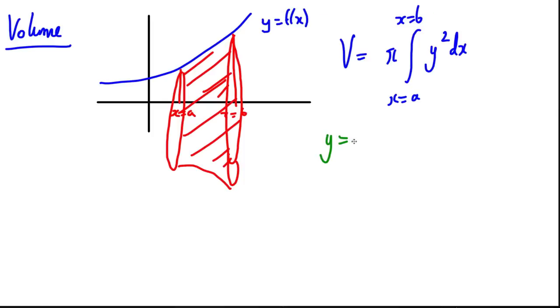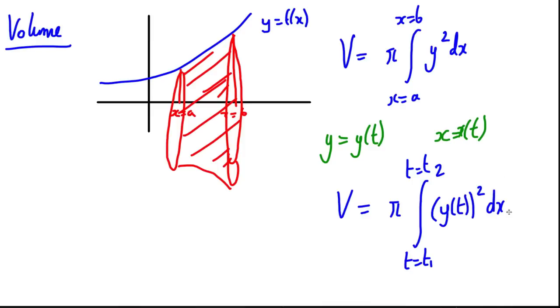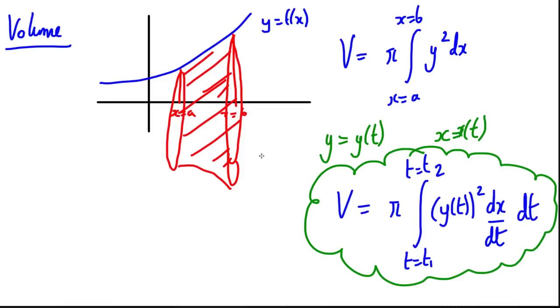When y is given in terms of a parameter t and so is x given in terms of a parameter t, then the new formula is: the volume is going to be still pi, but this time between t equals t1 and t equals t2. Okay, of still y squared, but y of t, it's given as a function of t squared, and then you're going to have here dx by dt dt. So this is the formula you need to be able to use in order to find the volume of revolution when a curve is given parametrically.